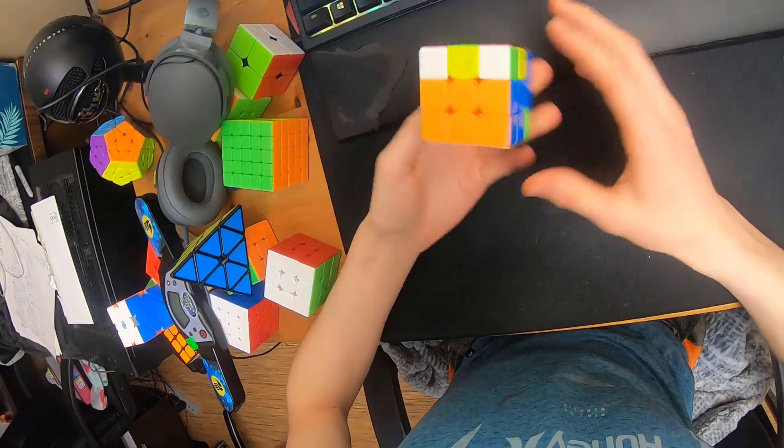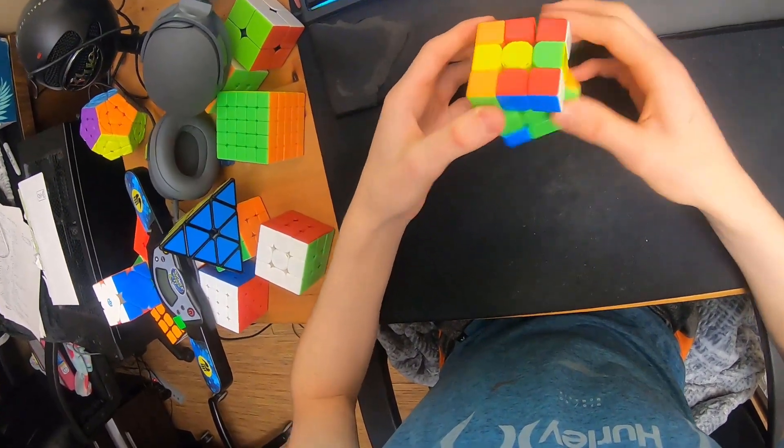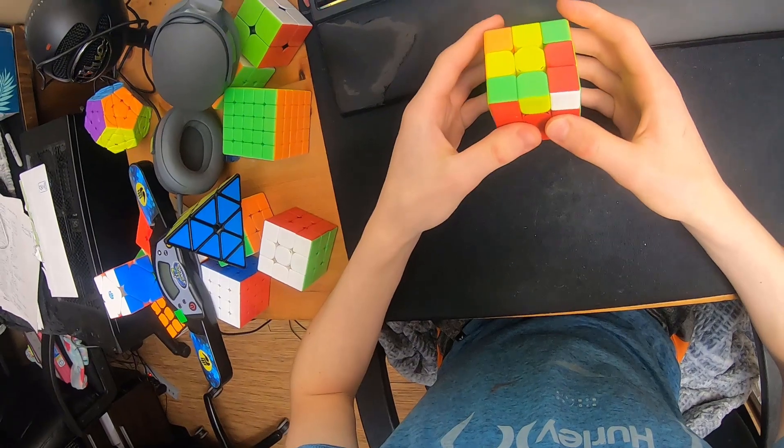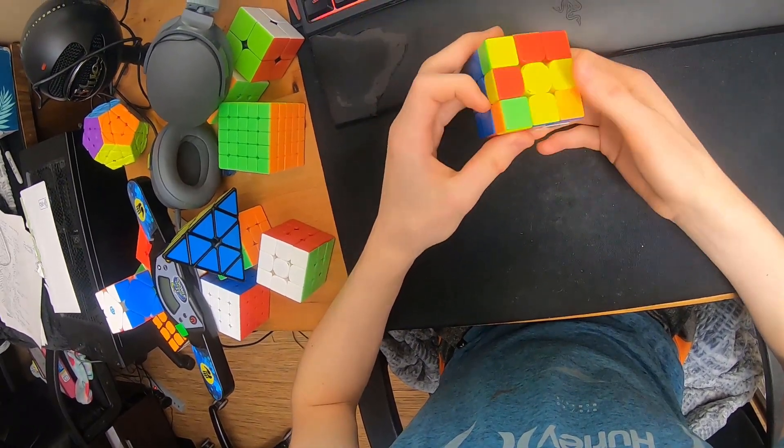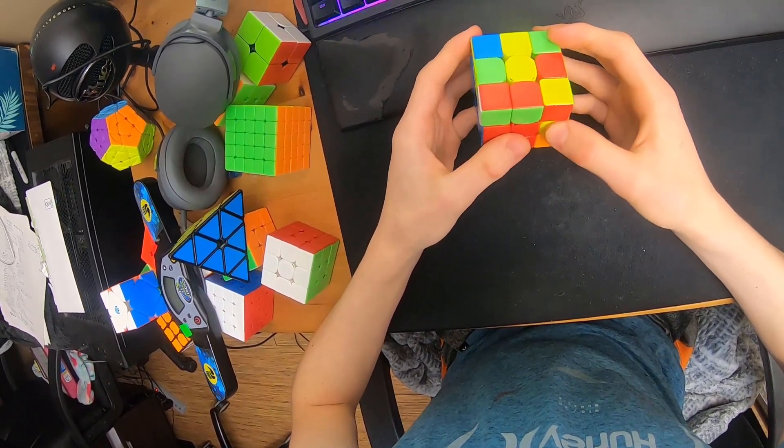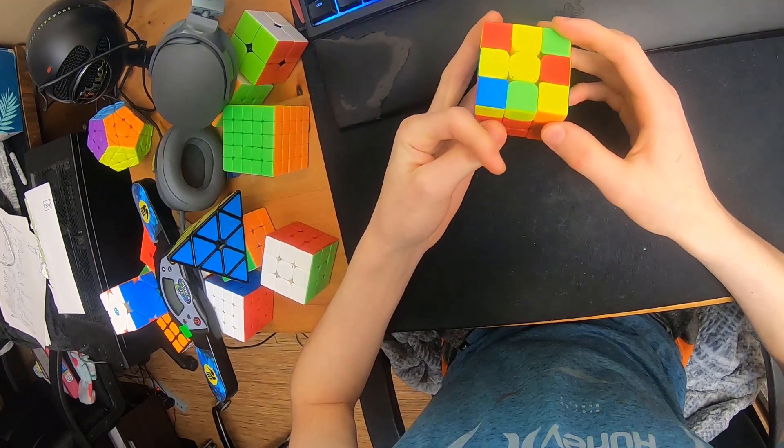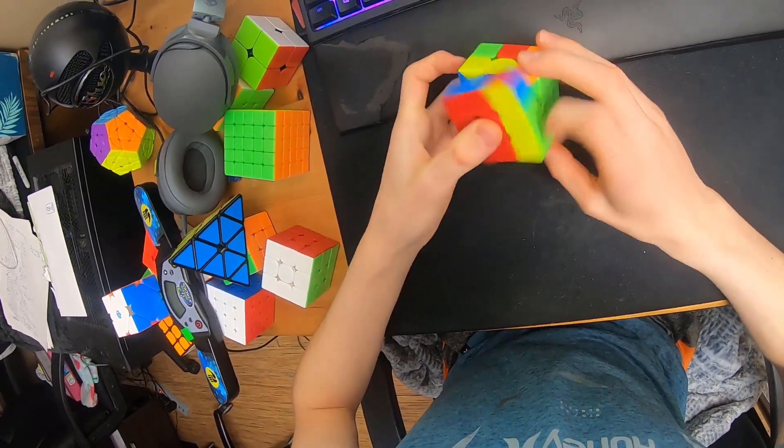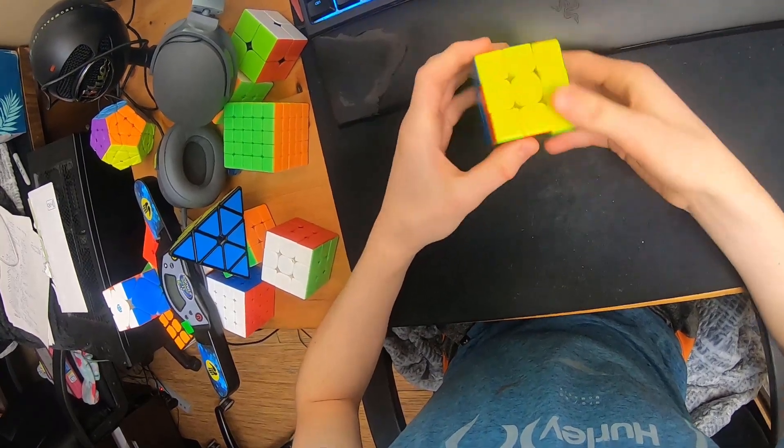And then go right into inserting this one in the back. Another one is made, insert it like that, and then these two, and then I could have cancelled into OLL, but I didn't, so I inserted, and then I did this, and then r-prime.